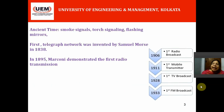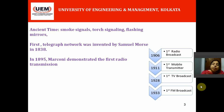In ancient times, people used smoke signals, torch signaling, and flashing mirrors for communicating purposes. Sometimes, people used pigeons to transmit information from one point to another. But that was for ancient times. What about the recent era?